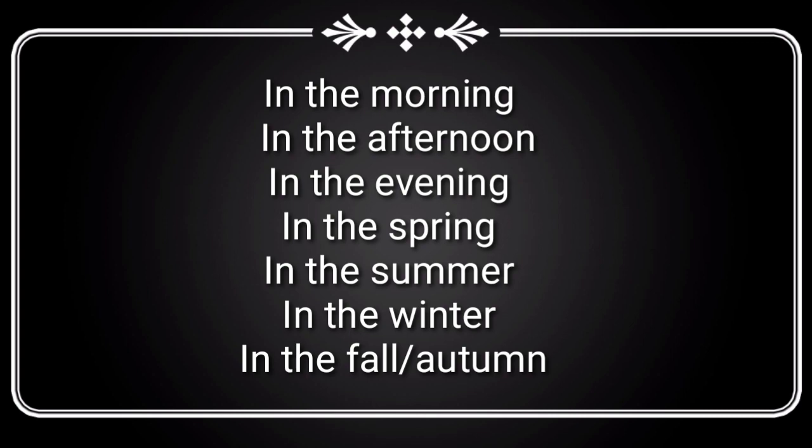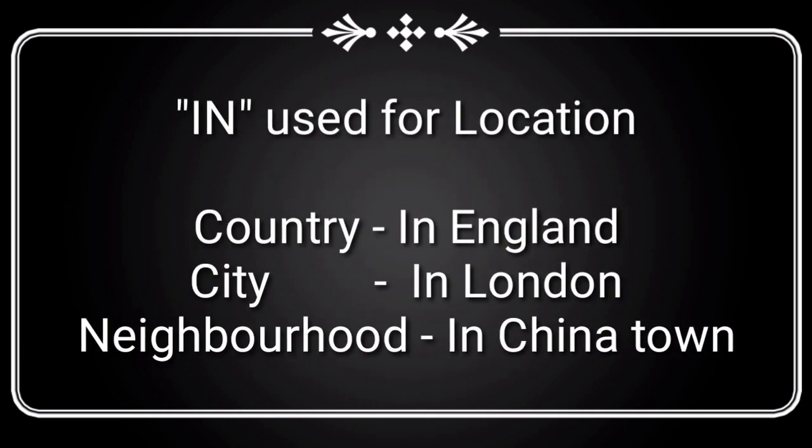More 'in' examples: 'in the evening', 'in the spring', 'in the summer', 'in the winter', 'in the fall or autumn'. Using 'in' for location: for a country we say 'I am in England'; for a city, 'I am in London'; for a neighborhood, 'I am in Chinatown'.